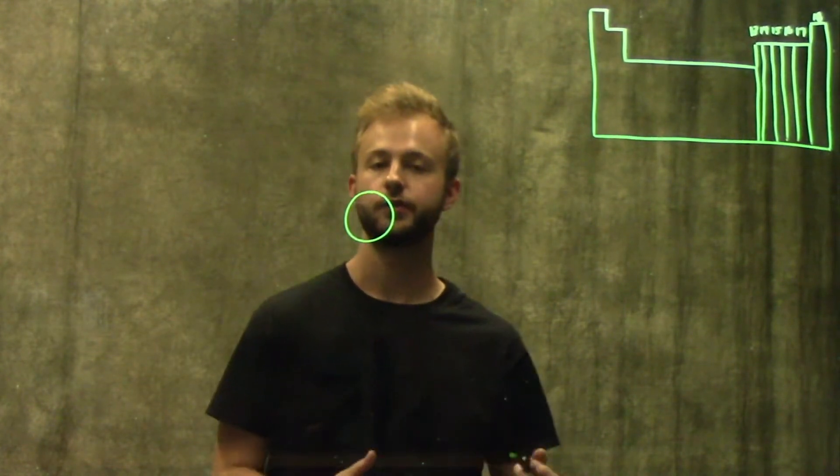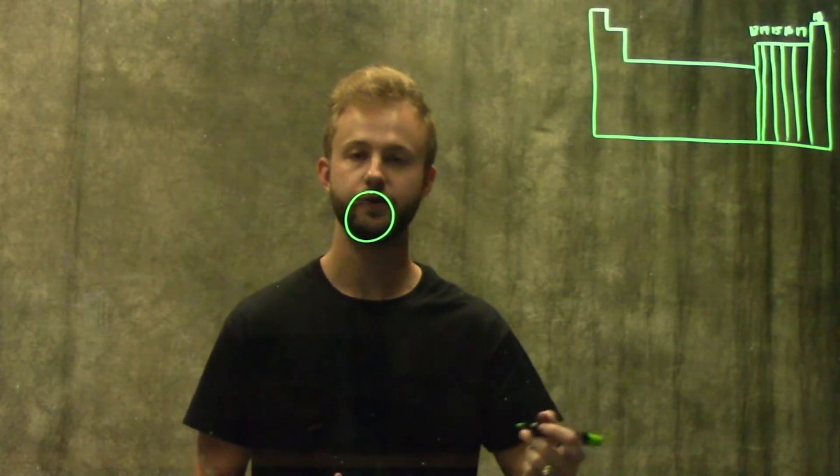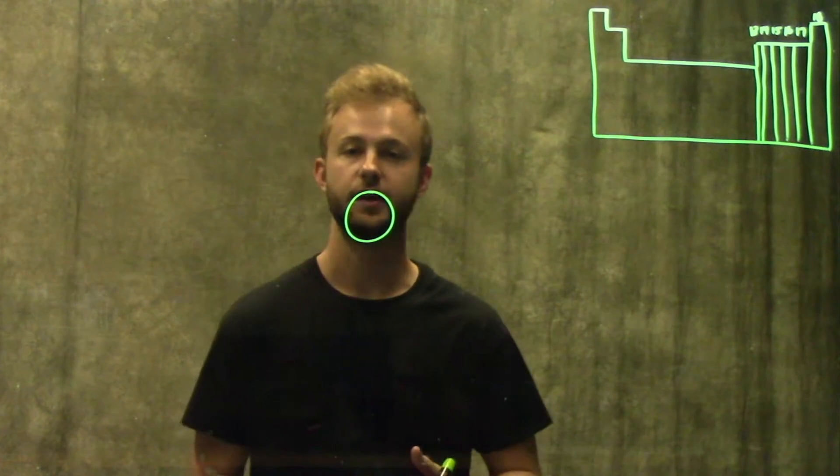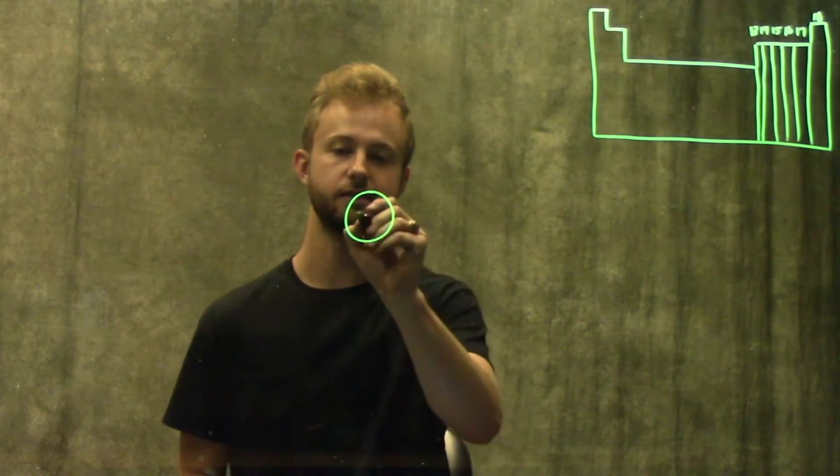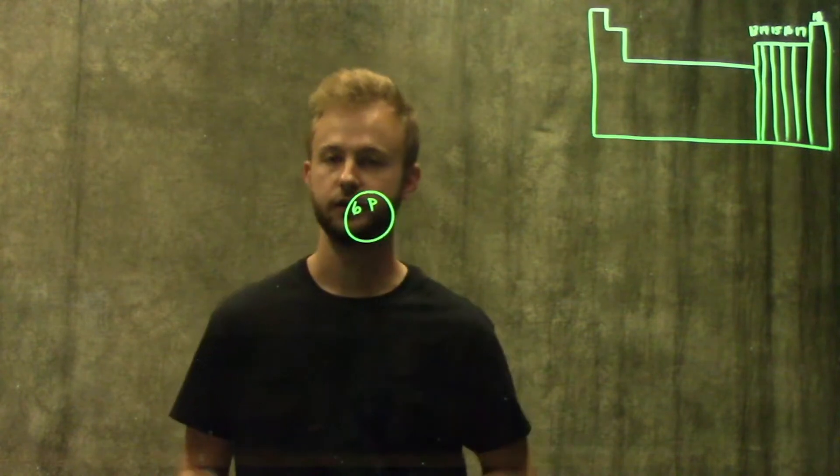So here we have our nucleus. We know from looking at the periodic table that a carbon atom has an atomic number of six, which means that it has six protons in its nucleus.